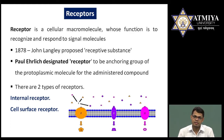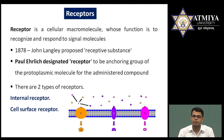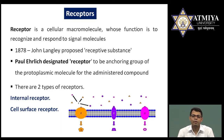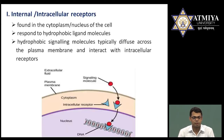Internal receptors are present inside the cell — they may be nuclear or cytoplasmic. Cell surface receptors are located on the cell membrane. In the diagram I have shown several types of ligand or signal molecules that bind to particular receptors. All ligands are very specific for their particular receptors; details have been explained in the previous video.